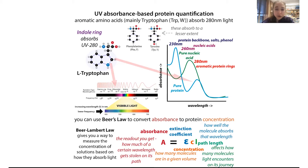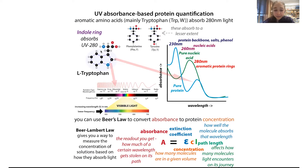Tryptophan has the most resonance, so it absorbs the strongest — it has more places where the molecule can absorb light, so you absorb more light overall. This relates to Beer's Law, which we use to convert absorbance to protein concentration. If your protein has a lot of tryptophan or very little tryptophan, that can affect your calculation.